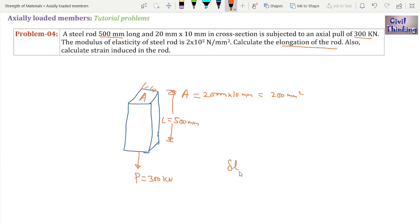Now we know delta L is PL divided by AE. If you don't know about this, please watch my previous video lecture on elongation of rods, or elongation of axially loaded members. You will understand where I get this.